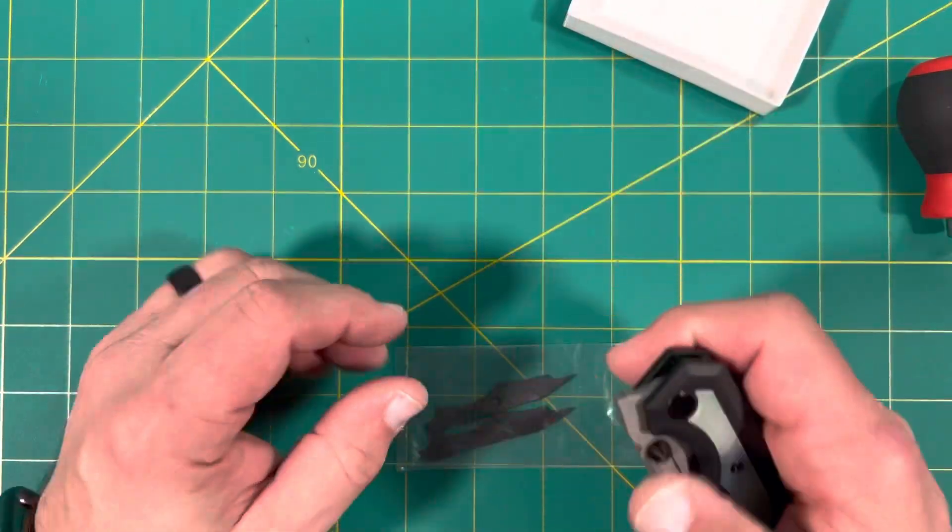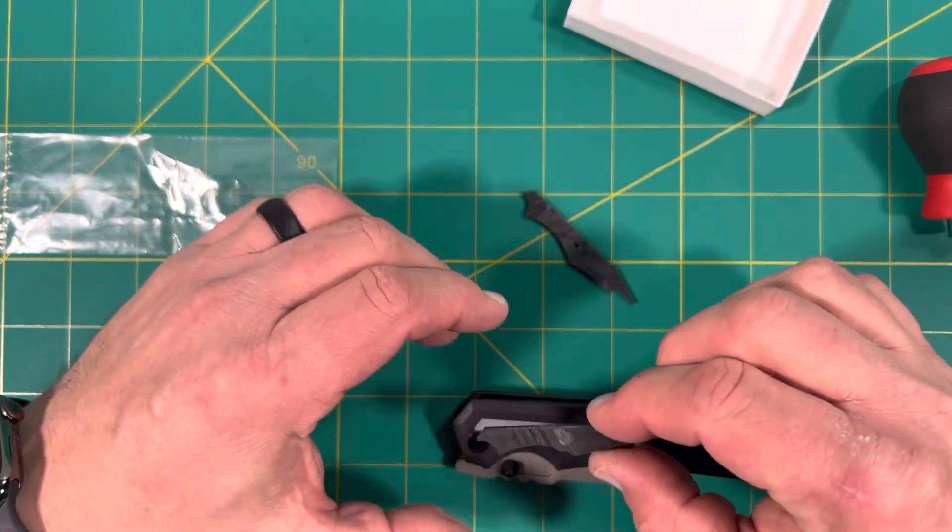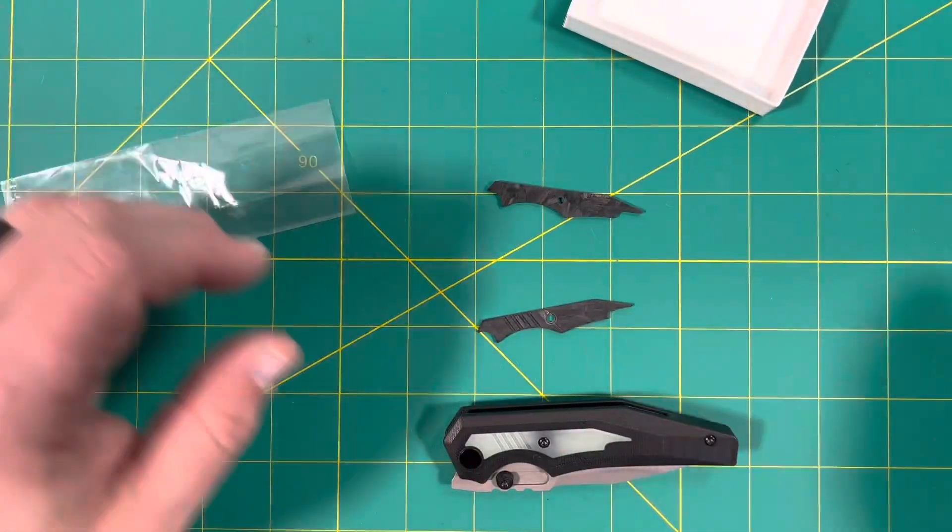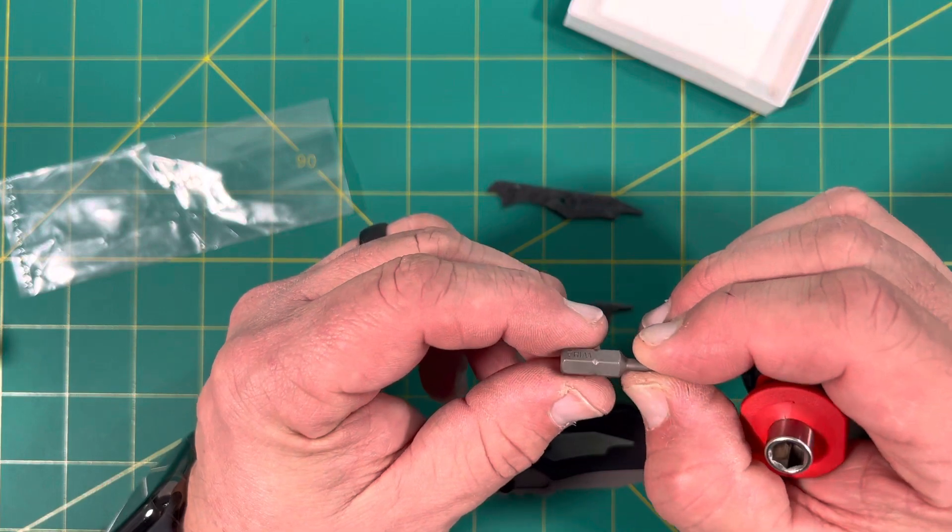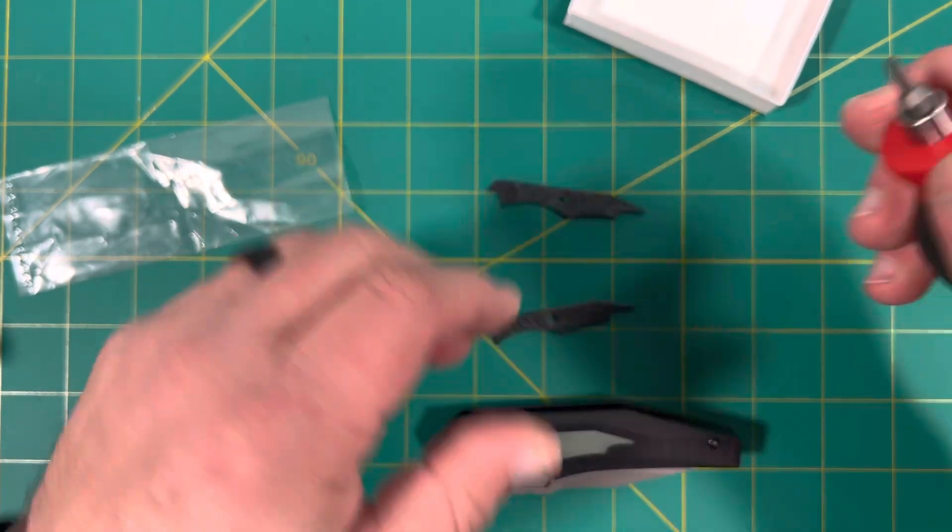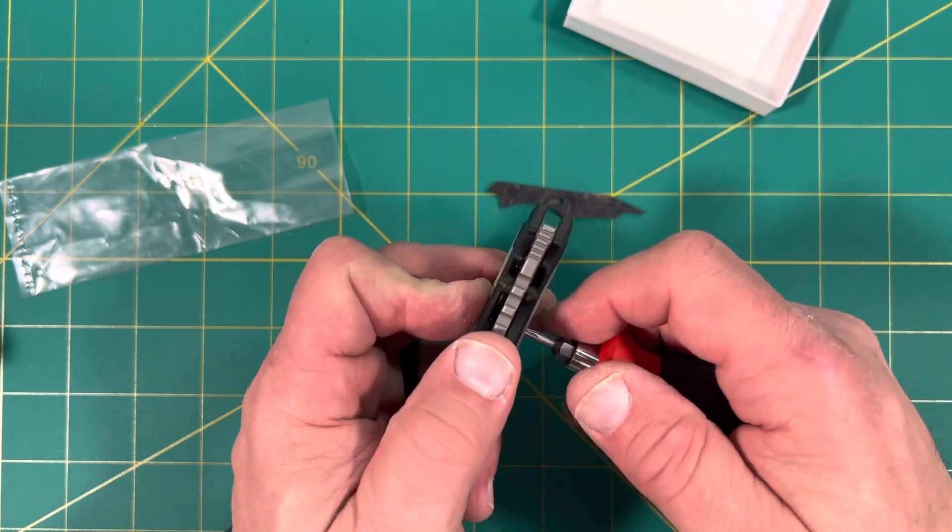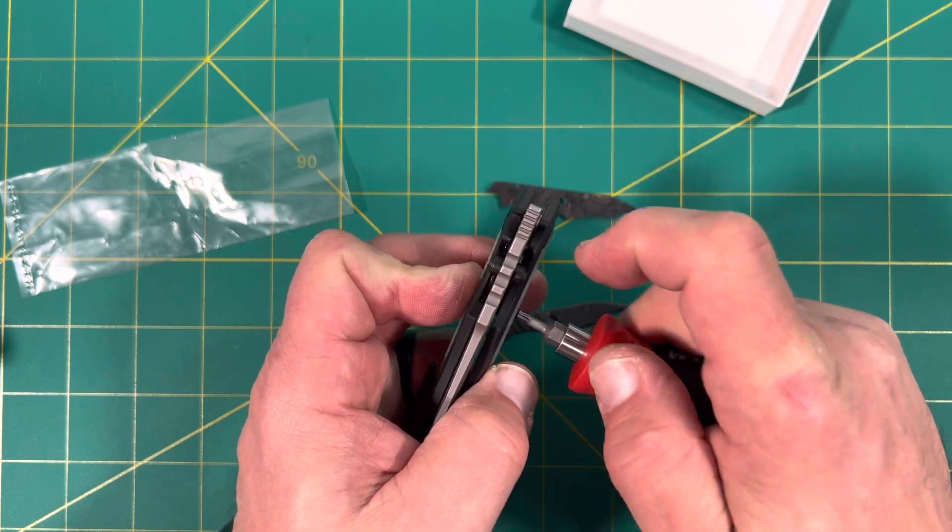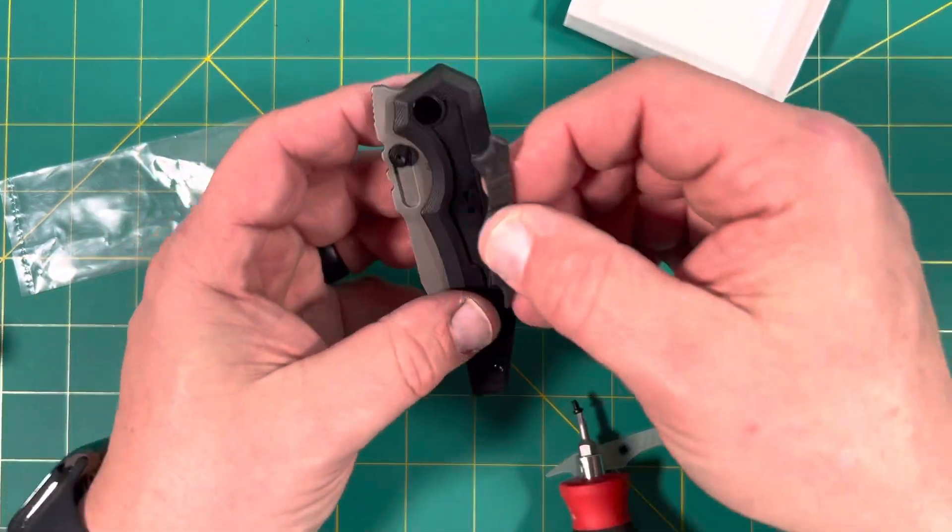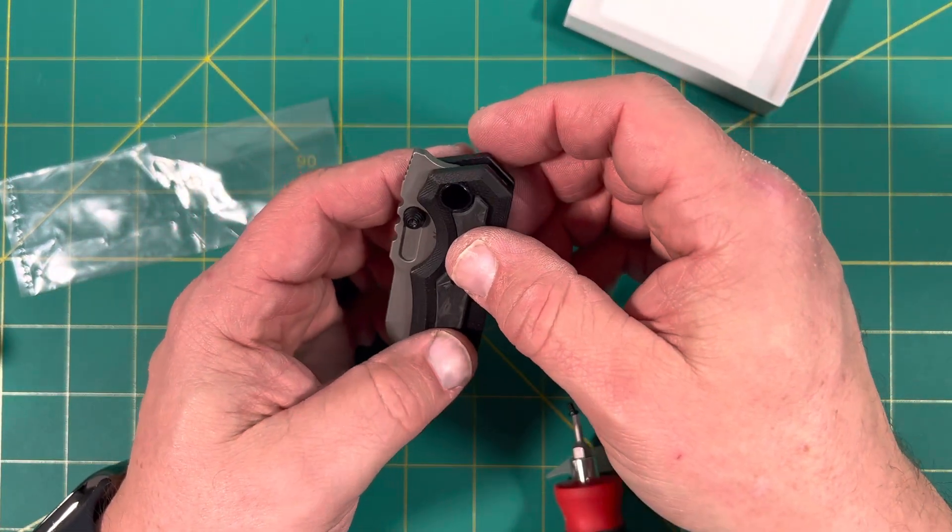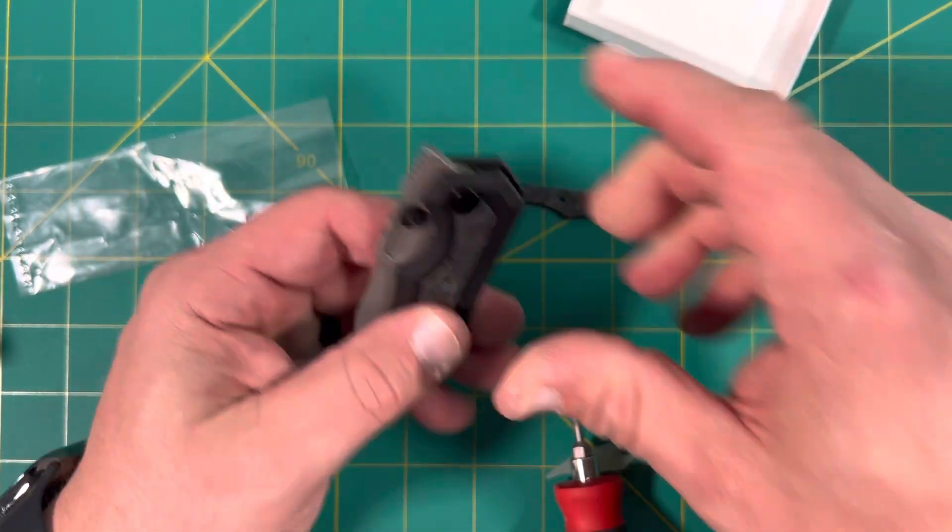So those go on that side. Should be pretty simple. Oops. T8s. There we go.